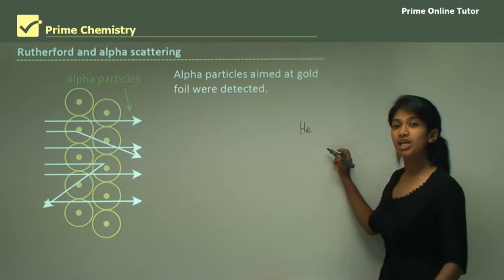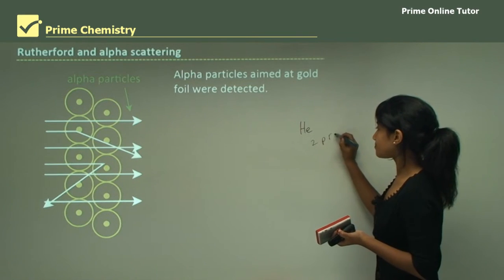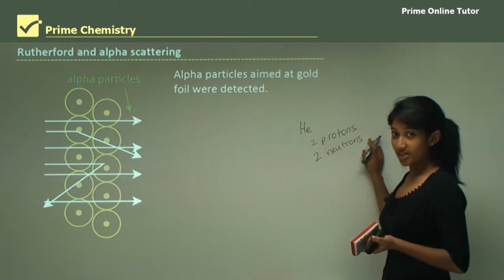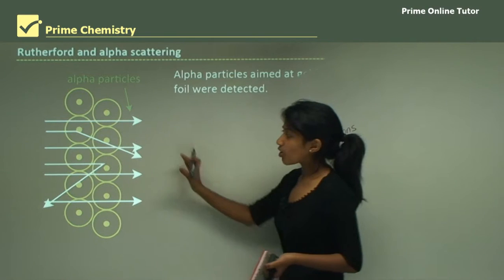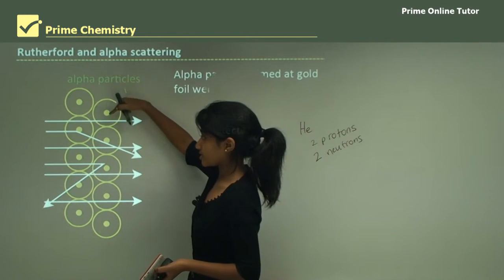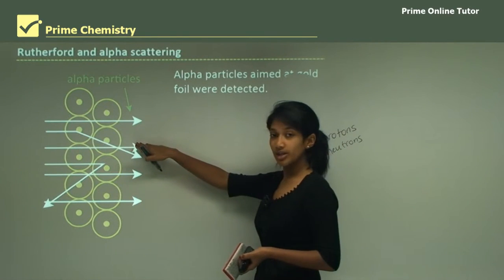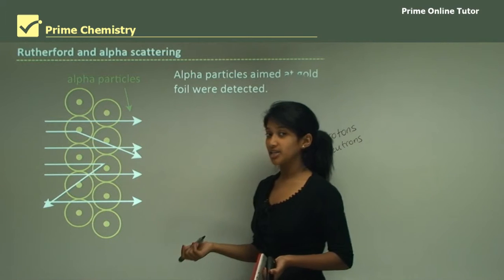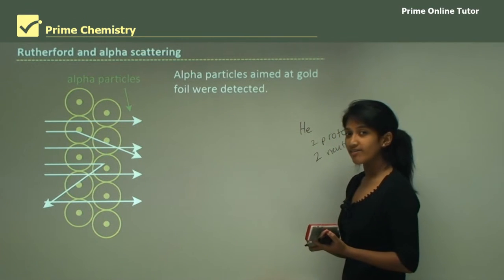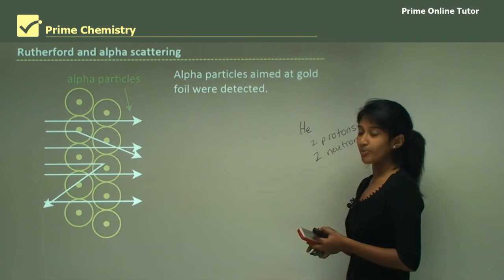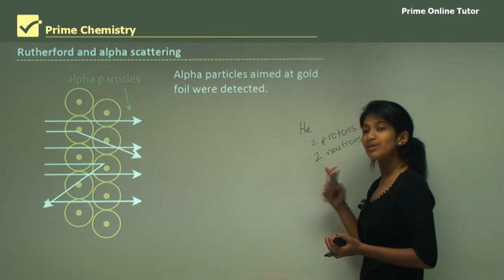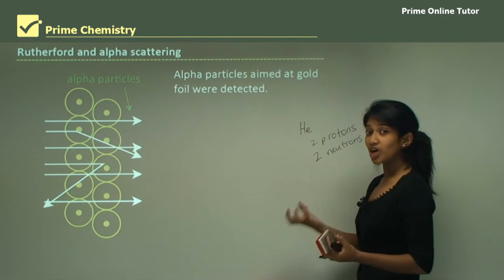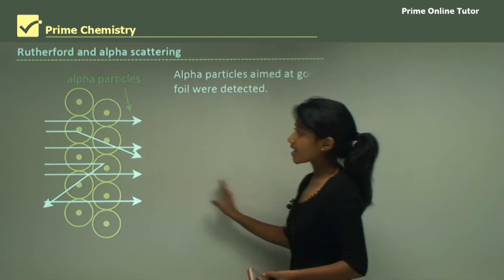Helium is He. The helium nucleus has two protons and two neutrons, giving it a mass of four — quite heavy. When alpha particles were shot through the gold foil, they were deflected at some points. The nucleus of the atom must have been quite heavy and also positively charged to repel these alpha particles. Alpha particles have two protons and two neutrons, so they're positively charged with no electrons to neutralize them — meaning like charges repel. That's why you can see the deflection.